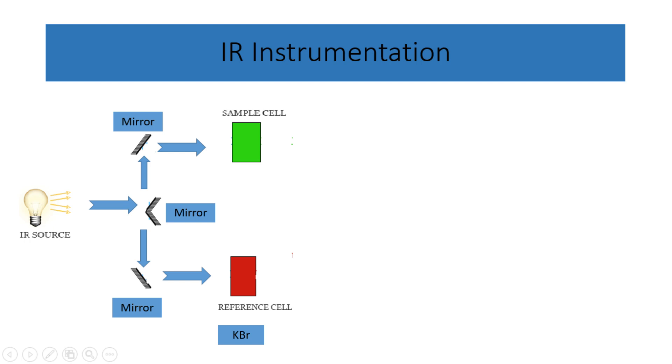Concurrently, in the sample cell, the light travels through the substance being analyzed. Some specific wavelengths are absorbed by the sample, resulting in a decrease in the light's intensity.